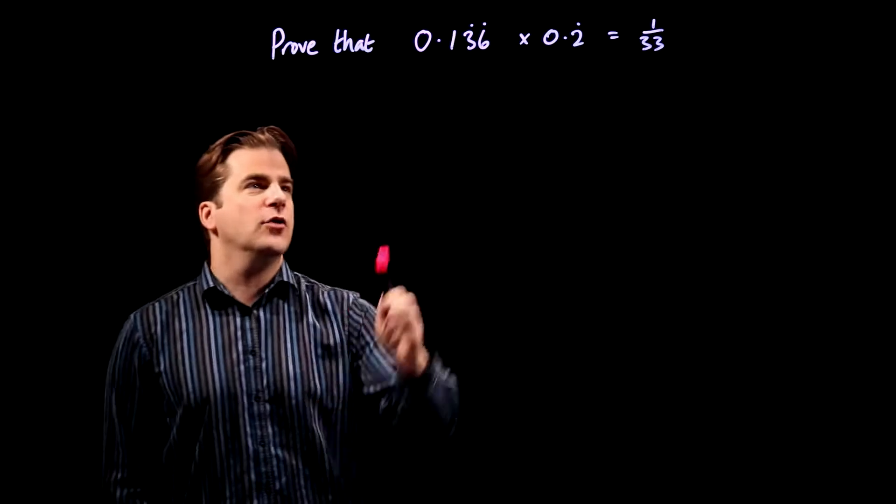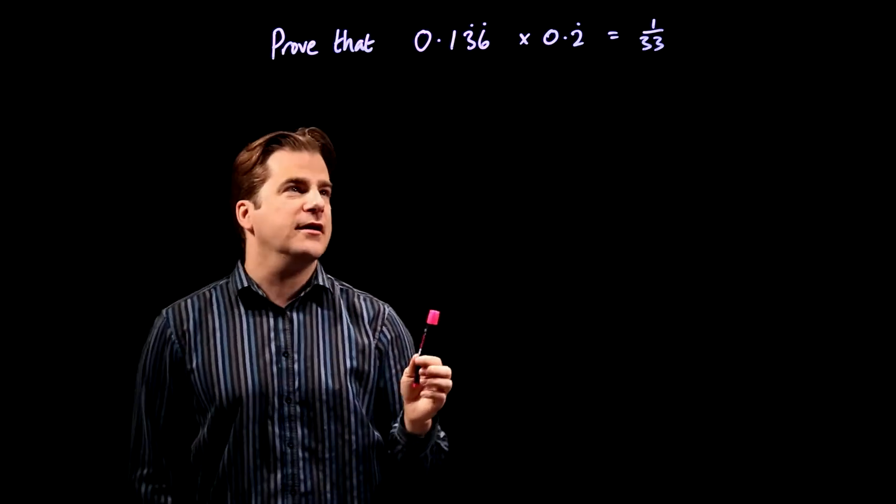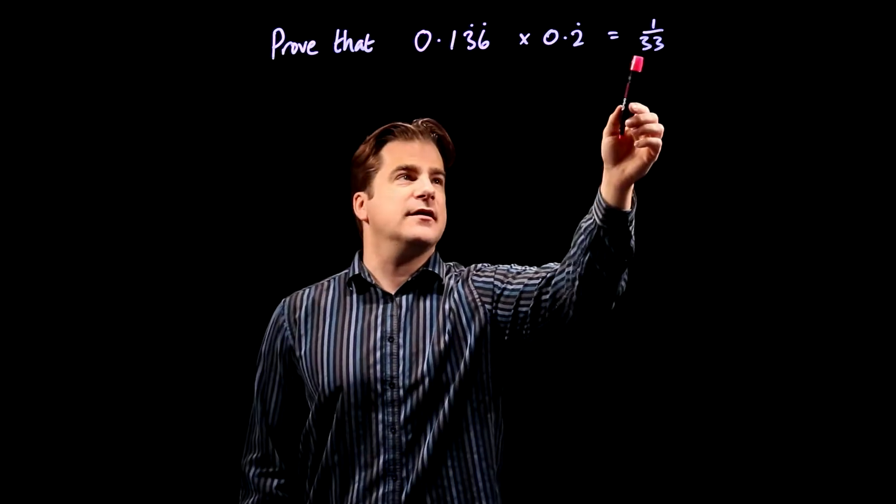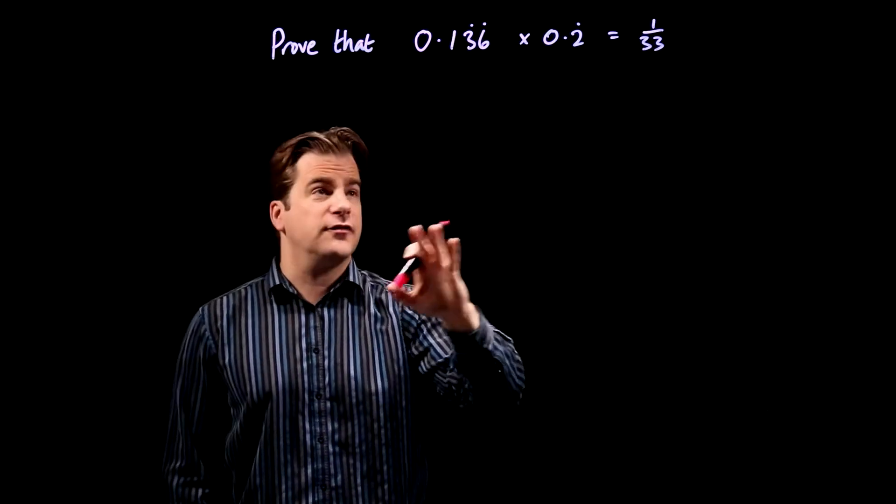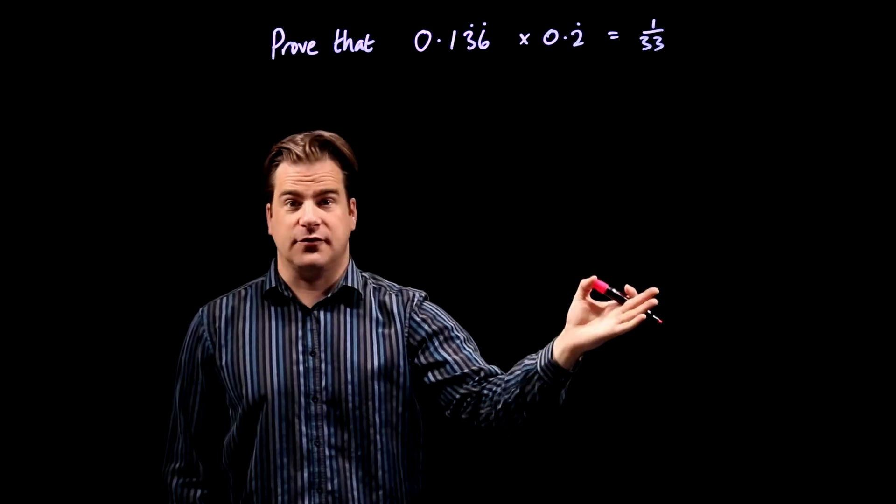Okay, we have to prove that 0.136 recurring times 0.2 recurring equals 1/33. These sort of questions are easy. Just follow the procedure and the answer falls out.